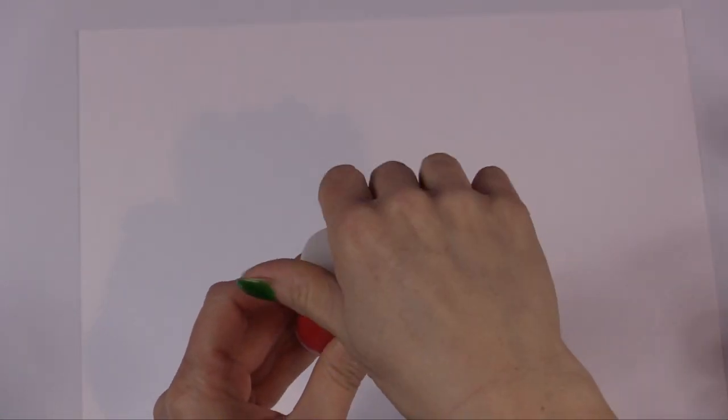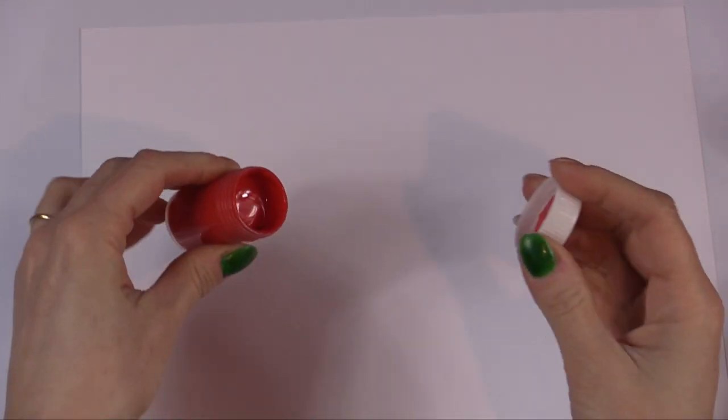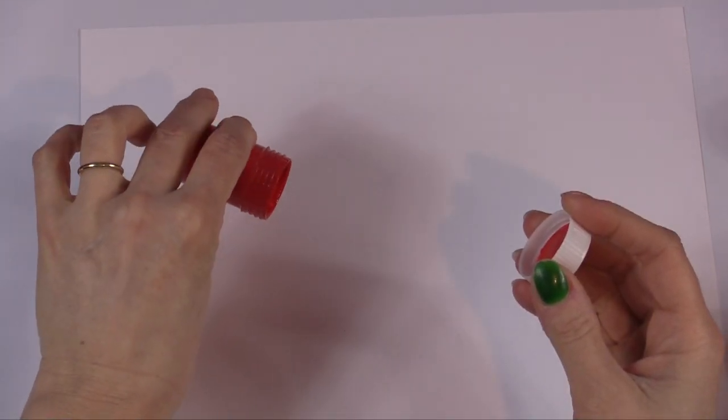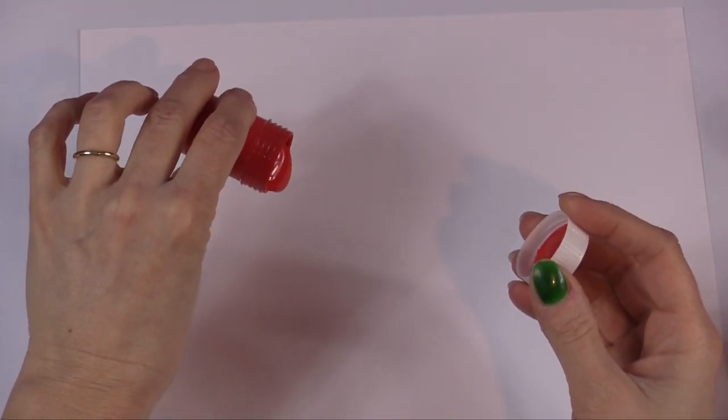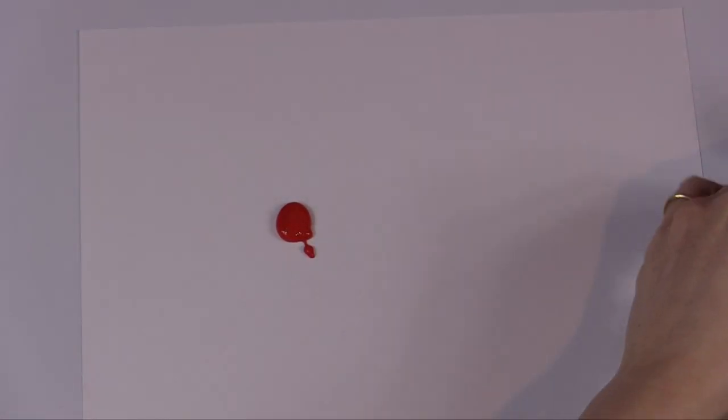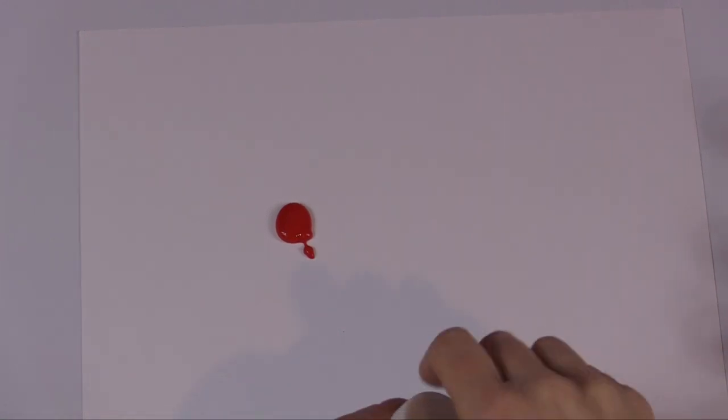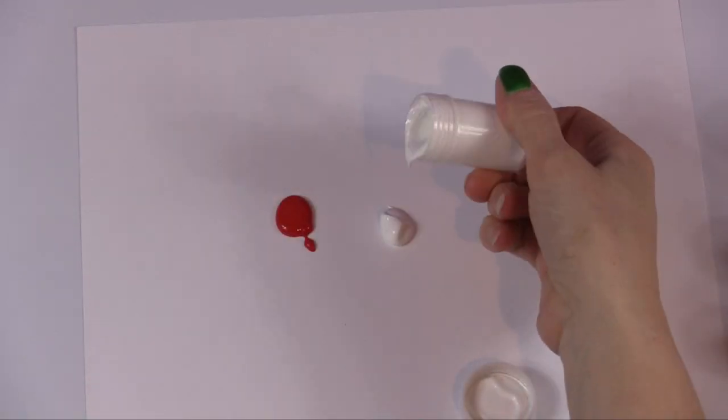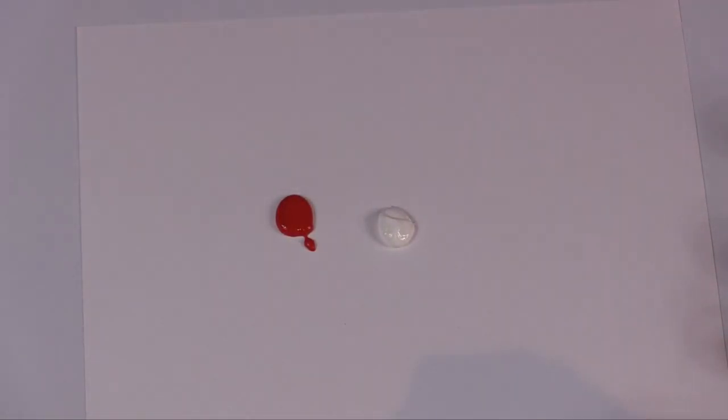So let's start by taking some red and we'll dump it on the paper and then we are going to take some white. There we go. And now we have a bright red and a white. But what happens if we mix the two together?